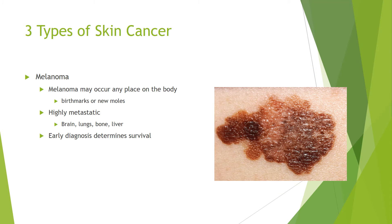The third type of skin cancer is melanoma. Melanoma can occur at any place on the body; however, birthmarks or new moles are of particular concern. It is highly metastatic and can spread throughout the body. The parts it spreads to most are the brain, lungs, bone, and liver. The survivability of melanoma depends on how early it was diagnosed.